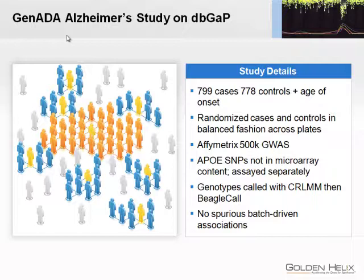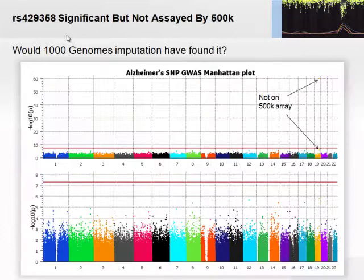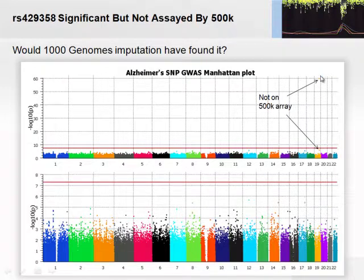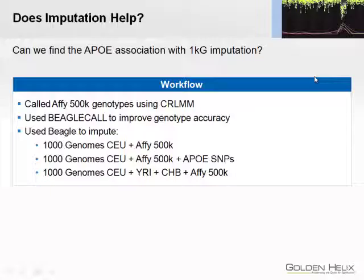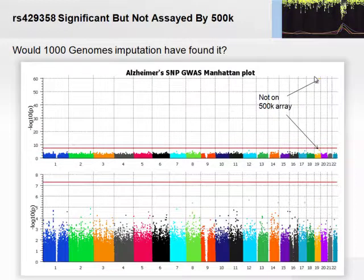Interestingly, the APOE — there are two APOE SNPs that they included in the study through low-throughput genotyping methods that are not on the 500K array. There's actually no variance in the 500K array. We called the genotypes with C-REALM as a feeder into BEAGLE Call, which does a nice job at alleviating batch effects, not completely. There were no spurious associations. If you do no filtering on the SNPs whatsoever, this is your Manhattan plot. The two peaks in orange in chromosome 19 are the two APOE SNPs — one at 10 to the minus 60th and another roughly at 10 to the minus 6th.